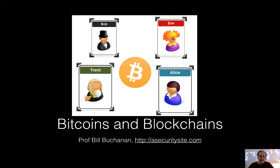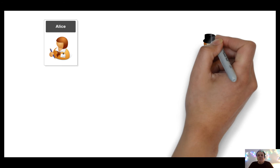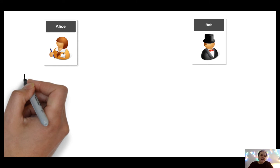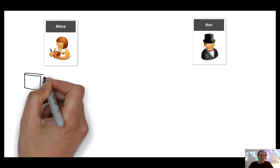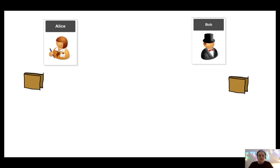Let's have a look at some Bitcoin technology and also how we integrate that into blockchain. We start off where we normally start in computer security with Bob and Alice. The basic definition within Bitcoin technology is that Bob and Alice each have a wallet — they can have multiple wallets if they want.